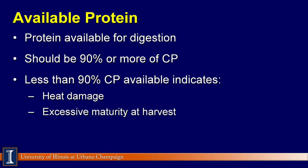Laboratory reports for crude protein will show available and unavailable crude protein. The available crude protein is that available for digestion by cows. Ninety percent or more of the crude protein in forages should be available for digestion.